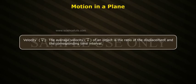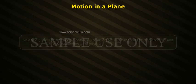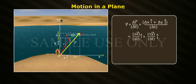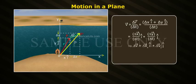Velocity. The average velocity V bar of an object is the ratio of the displacement and the corresponding time interval. V bar equals ΔR bar by ΔT, which equals ΔX i-cap plus ΔY j-cap divided by ΔT. That implies V bar equals Vx i-cap plus Vy j-cap.